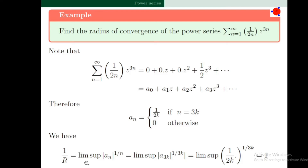Therefore 1/R = lim sup of |a_{3k}|^(1/(3k)) = lim sup of (1/(2k))^(1/(3k)). The limit of this sequence is 1. Therefore the limit superior equals 1, so the radius of convergence of the power series is 1.